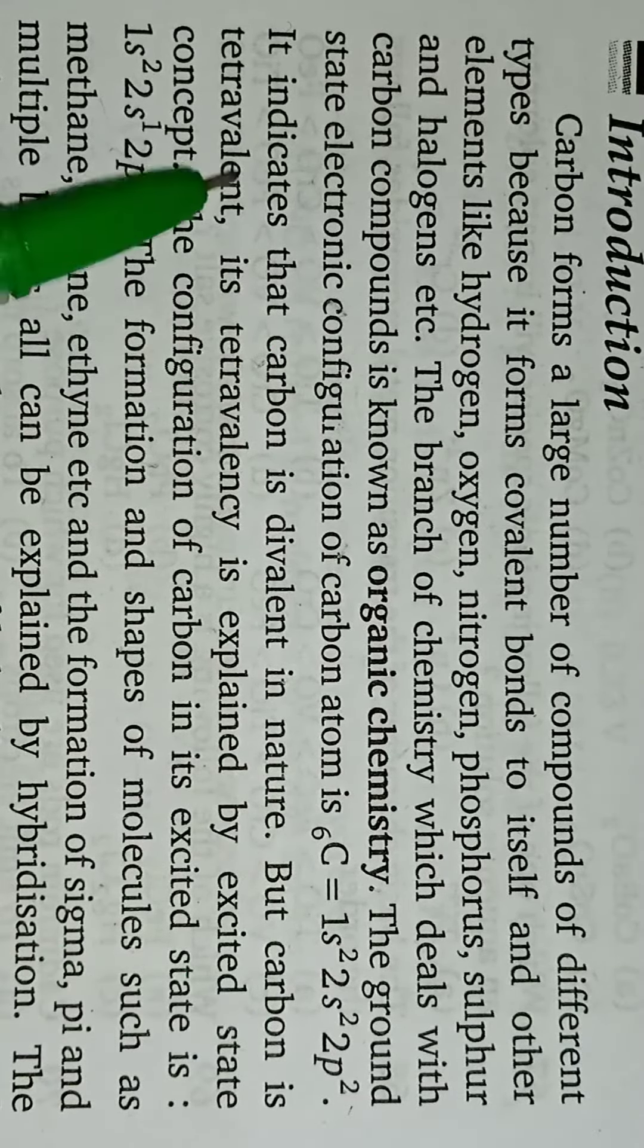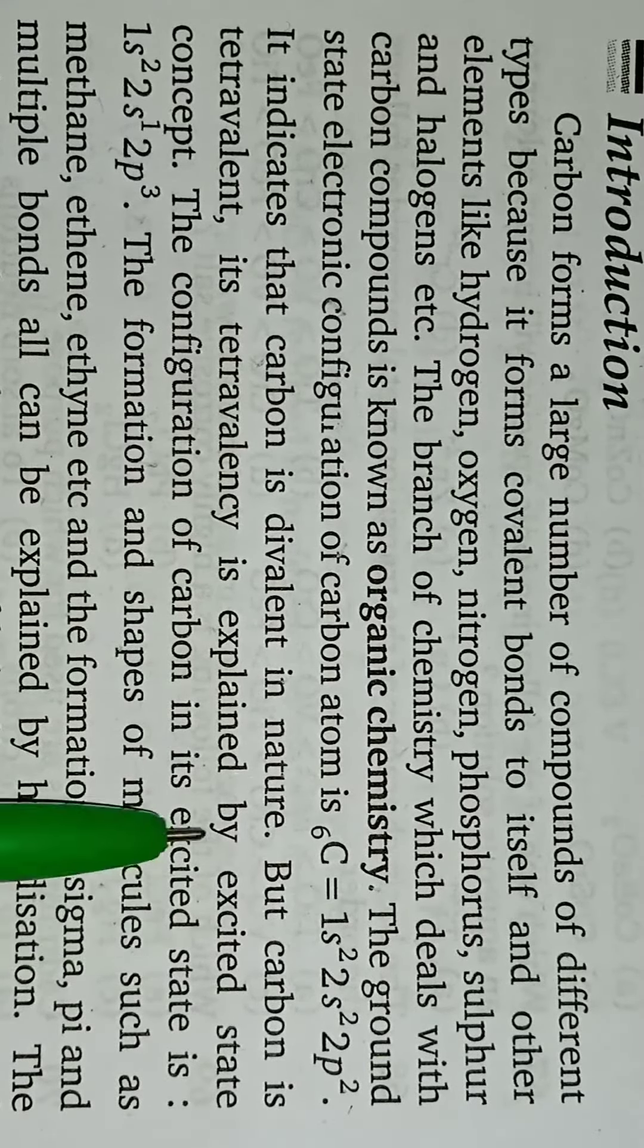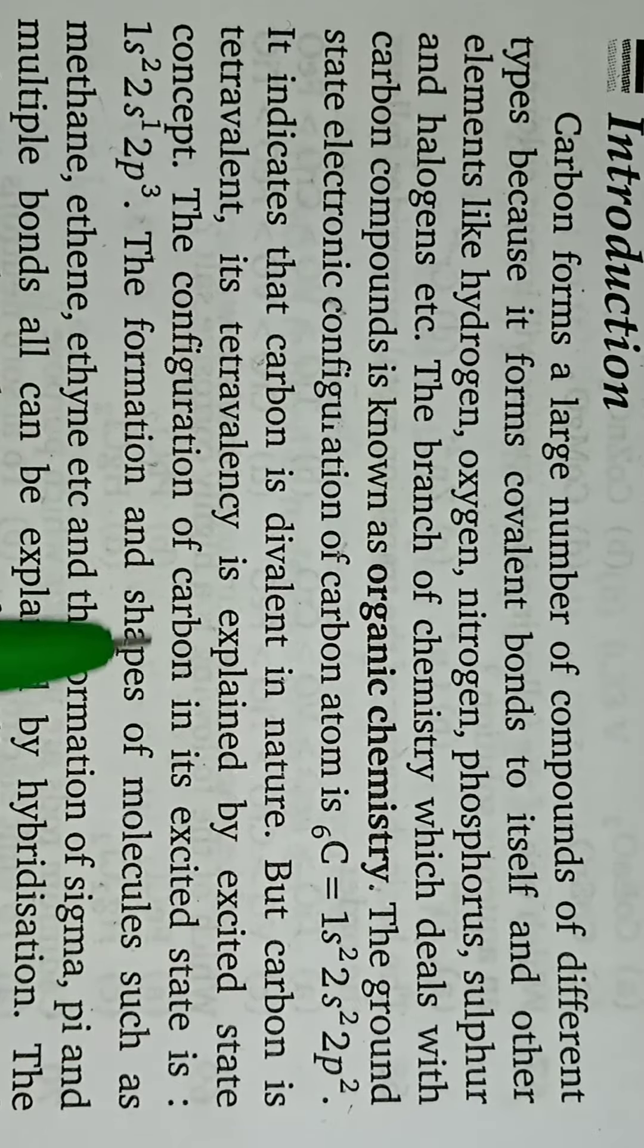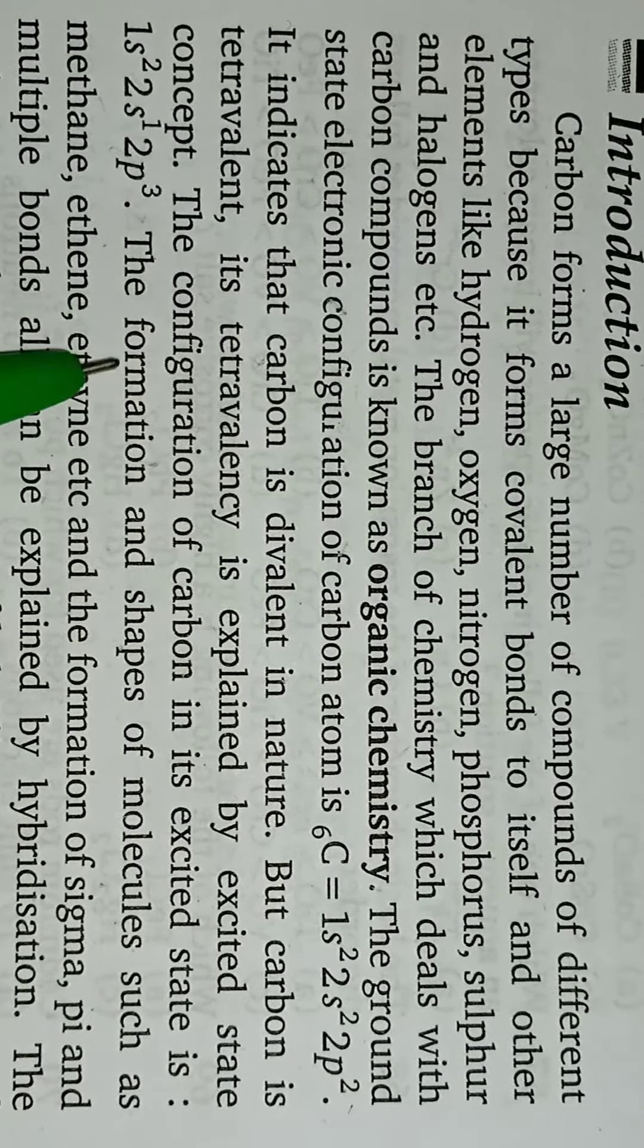1s² 2s² 2p². It indicates that carbon is divalent in nature, but carbon is tetravalent. Its tetravalency is explained by the excited state concept. The configuration of carbon in its excited state is 1s² 2s¹ 2p³, which explains the formation